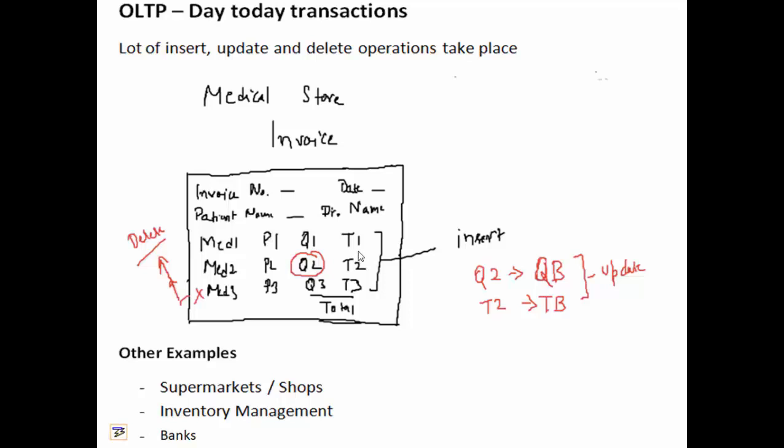Similarly, the details are written for medicine two and three. It means a lot of inserts took place in the database. Later that person said for medicine two that he needs more quantity. So quantity changes from Q2 to QB and the total changes from T2 to TB. So in the database update operation takes place.